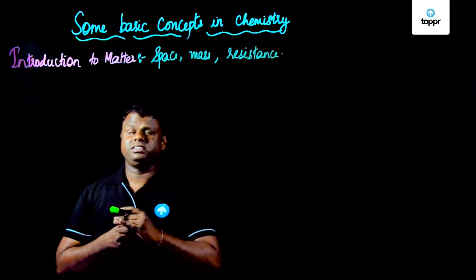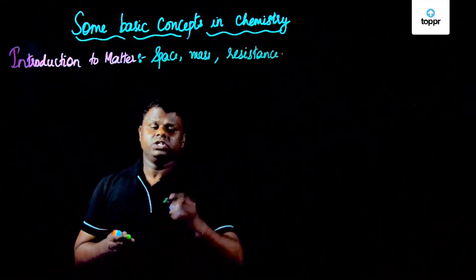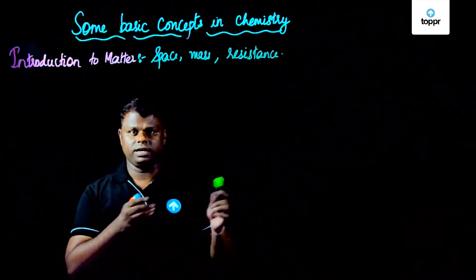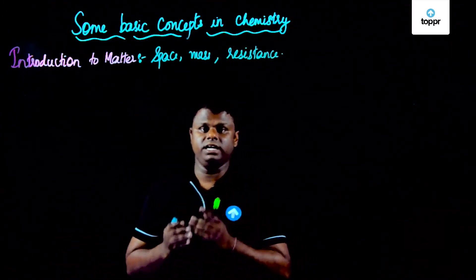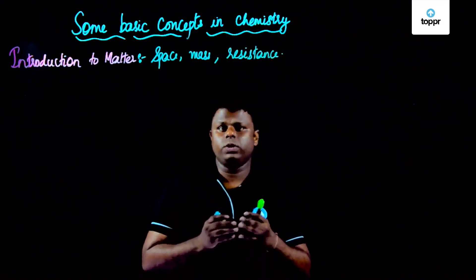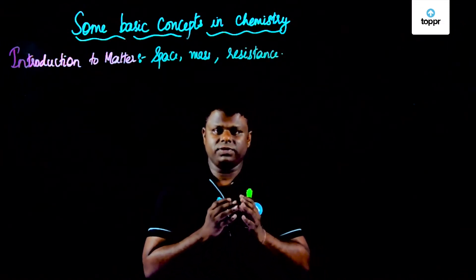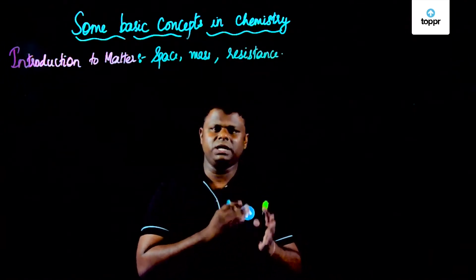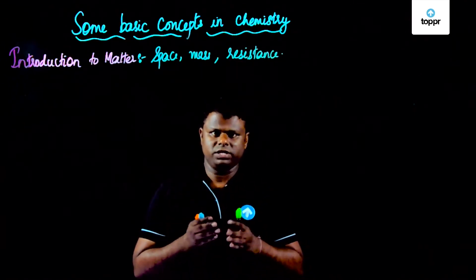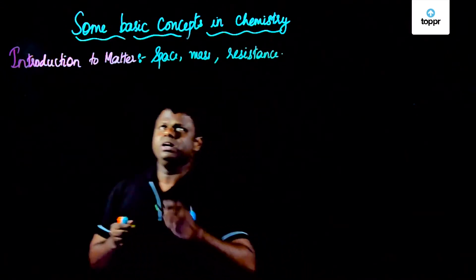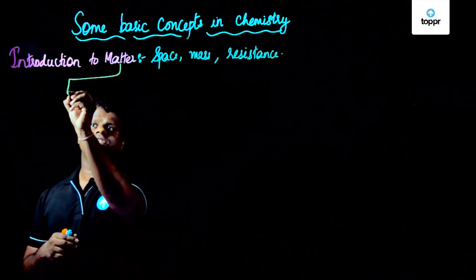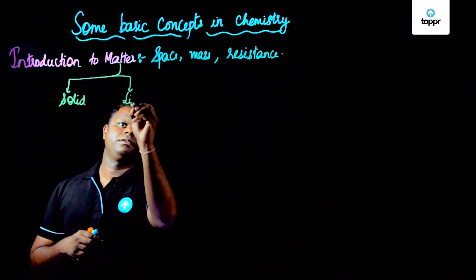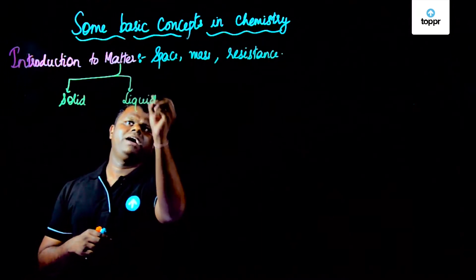So now what exactly we are going to deal with — matter has different states. Three principal states, though there are others as well. The three principal states which we normally deal with are solid, liquid, and gas. There is a fourth state like plasma, but that is something you don't deal with much in your chemistry or in your day-to-day life. So matter has three principal states: solid, liquid, and gas.